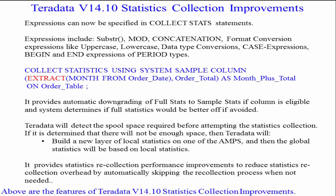Teradata will detect the spool space required before attempting statistics collection. If it is determined that there will not be enough space, then Teradata will build a new layer of local statistics on one of the AMPs, and then the global statistics will be based on local statistics. It provides statistics recollection performance information to reduce overhead by automatically skipping the recollection process when it just isn't needed.